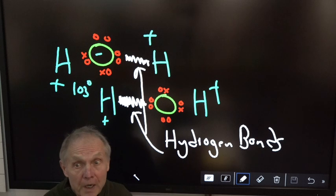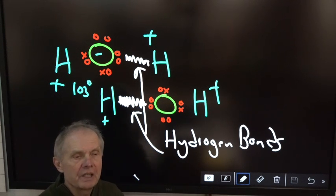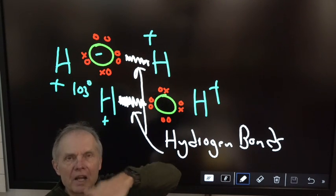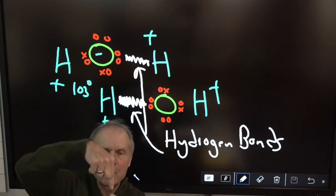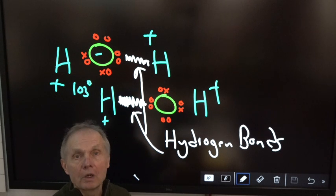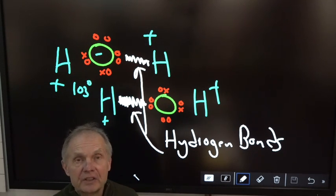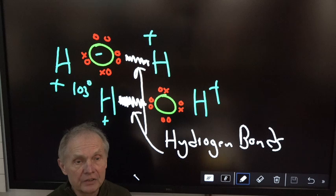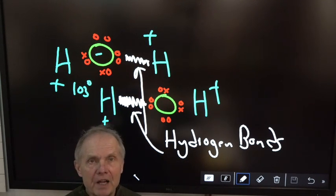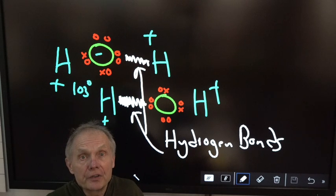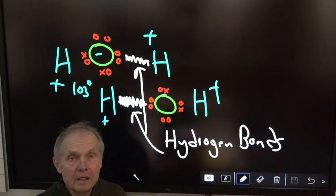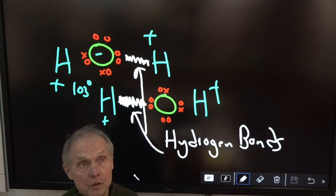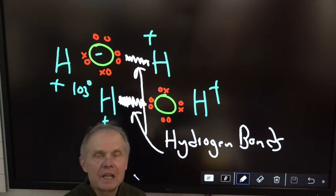Hydrogen bonding gives water crazy properties. You've seen the meniscus on a graduated cylinder — water creeps up the sides of the glass. If you put a paper towel in water, it climbs up — capillary action. Bugs or leaves can lay on water — surface tension. If water didn't have these strong hydrogen bonds, there'd be no life on Earth, because every time it rained, the water would evaporate before it hit the ground.